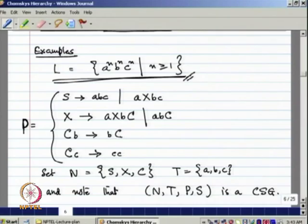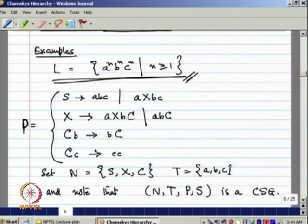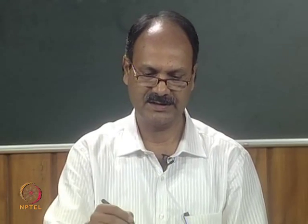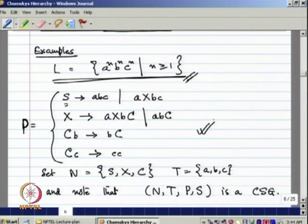In no production rule is the length of the left-hand side more than the length of the right-hand side — it is at most equal (as in CB → BC). In other cases it is less than the length of the right-hand side. So it is basically a Type 1 grammar, which is a context-sensitive grammar. The set of non-terminals is {S, X, C} and the set of terminal symbols is {a, b, c}. It is quite clear that this is a context-sensitive grammar (CSG).